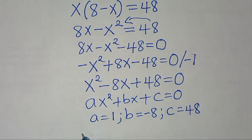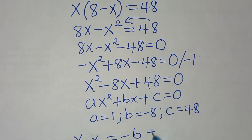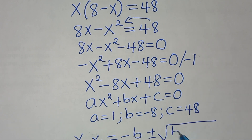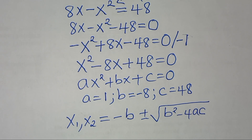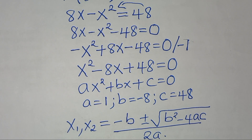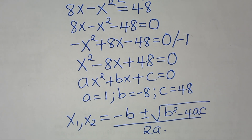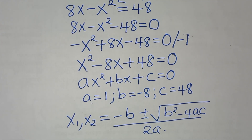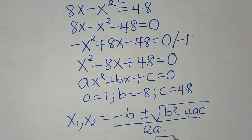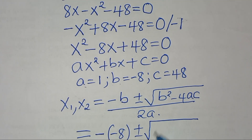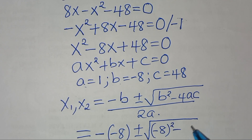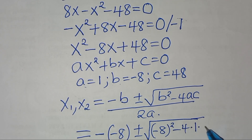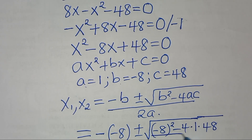To solve for x, we apply the quadratic formula: x equals minus b plus or minus the square root of (b squared minus 4ac), all divided by 2a. Substituting the values: x equals minus(minus 8) plus or minus the square root of (minus 8 squared minus 4 times 1 times 48), divided by 2.